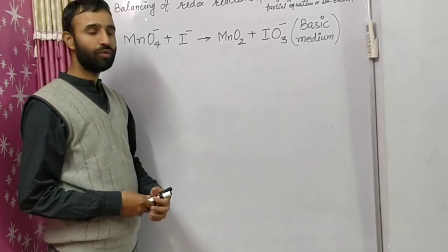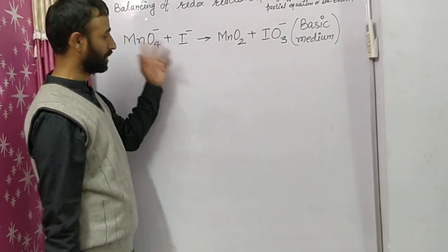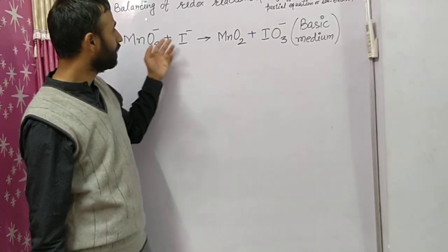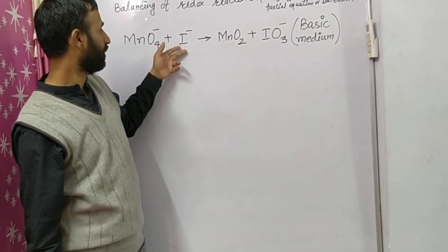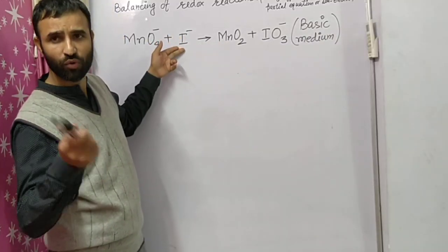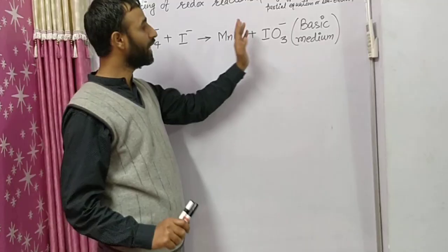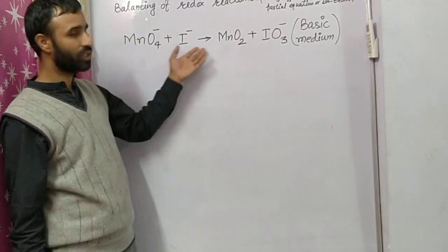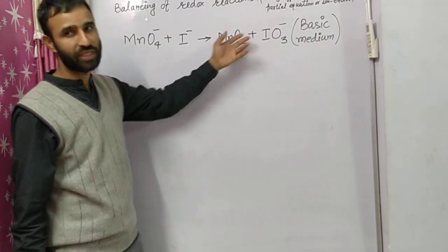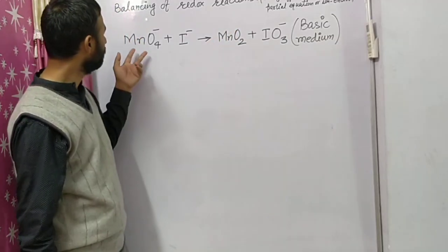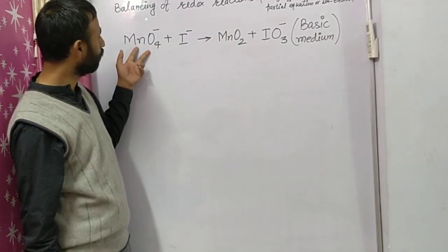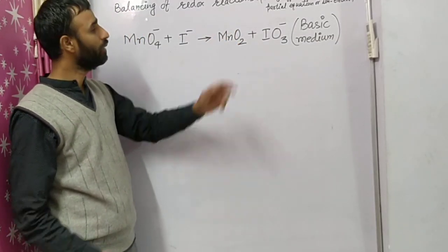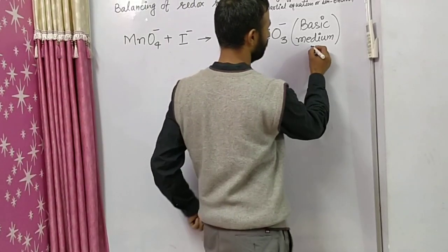In our previous video, we studied the balancing of MnO4⁻ to MnO2 and C2O4²⁻ to CO2 in acidic medium. Now we are balancing the equation in basic medium. In basic medium, MnO4⁻ is converted into MnO2 — this applies in basic or neutral medium.